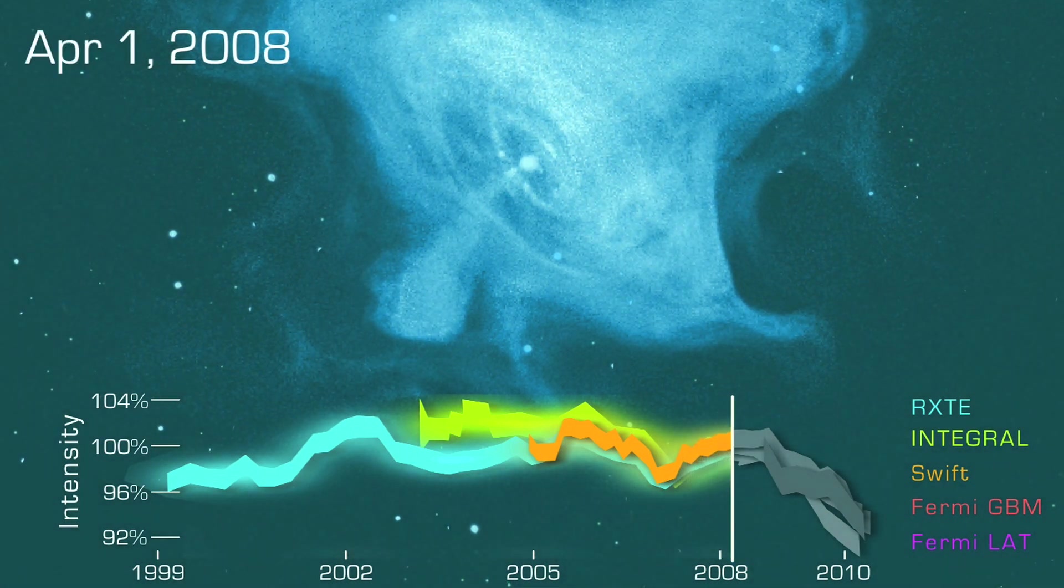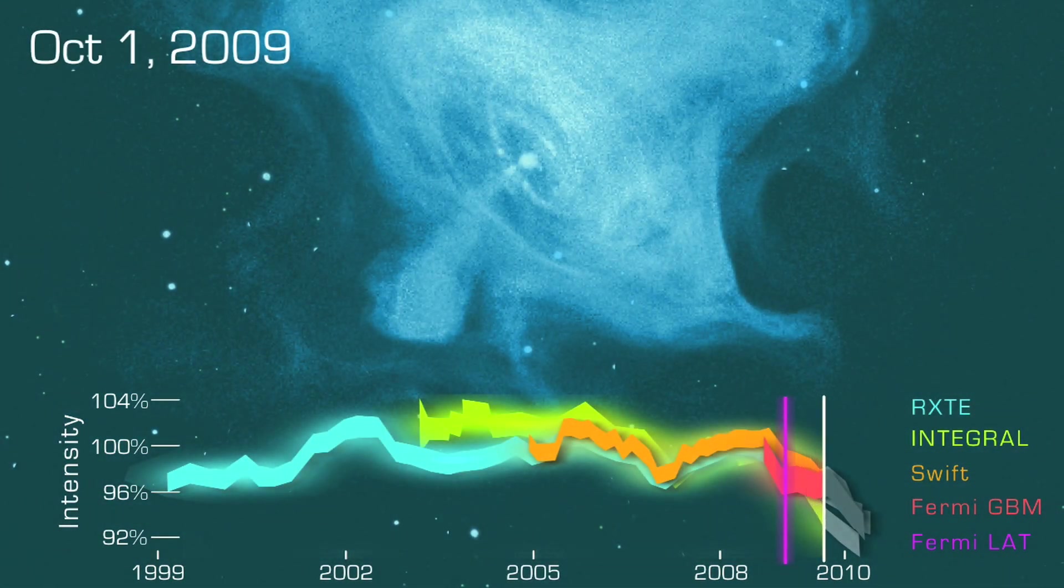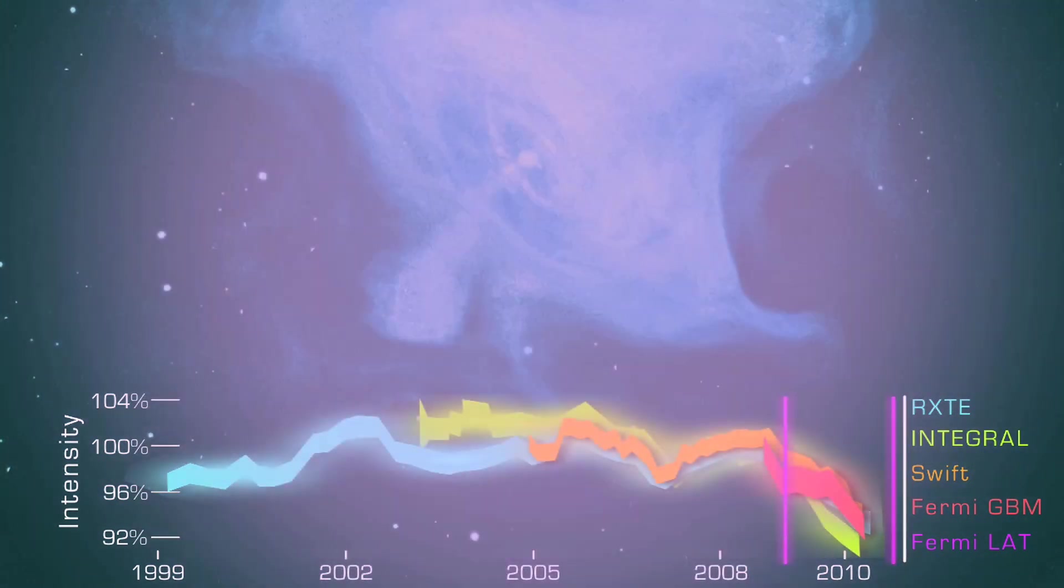Once regarded as an unchanging standard, the Crab Nebula flickers with energy ultimately provided by a long-dead star.